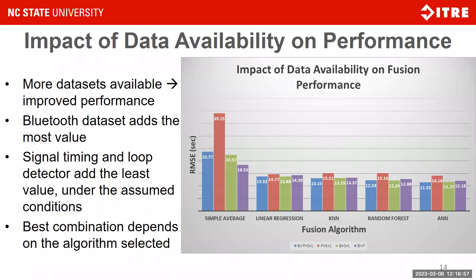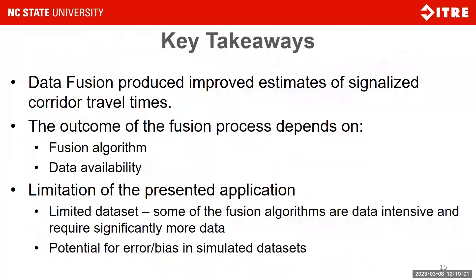Key takeaways: data fusion produced improved estimates of signalized corridor travel times, and the outcome depends on the fusion algorithm and data availability. Limitations include a limited data set that prevented application of more data-intensive algorithms. We are aware of potential errors and biases introduced in the simulated data sets, though we tried to keep those minimal and ensured that errors inherent to each data type — such as Bluetooth location detection error — were accurately introduced in our simulated data.